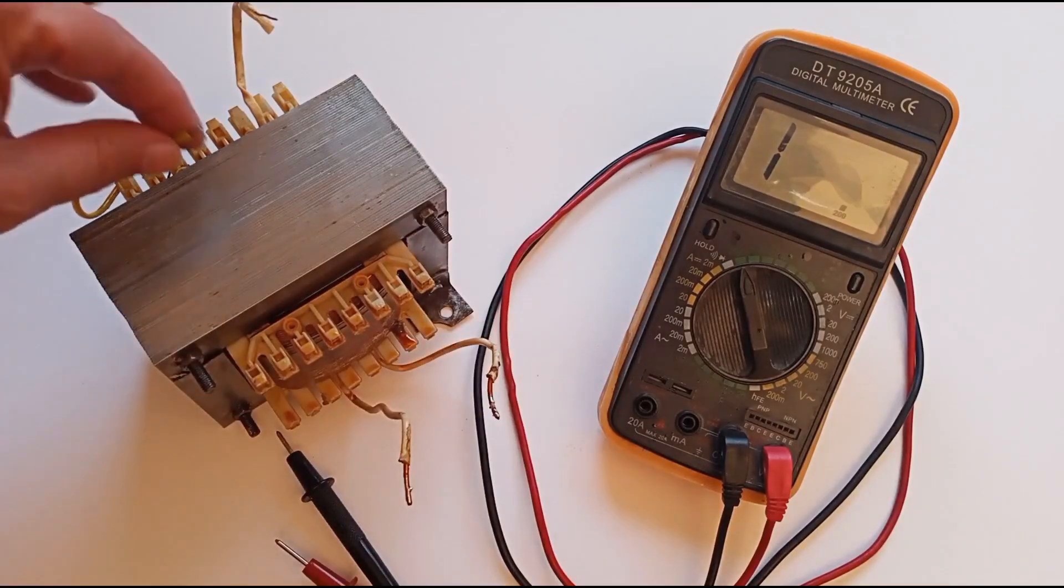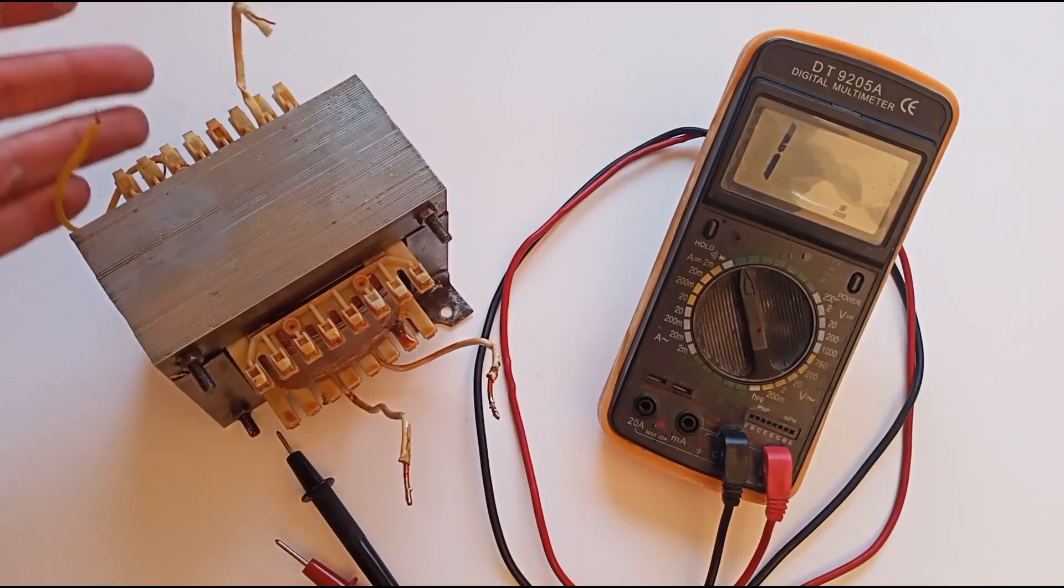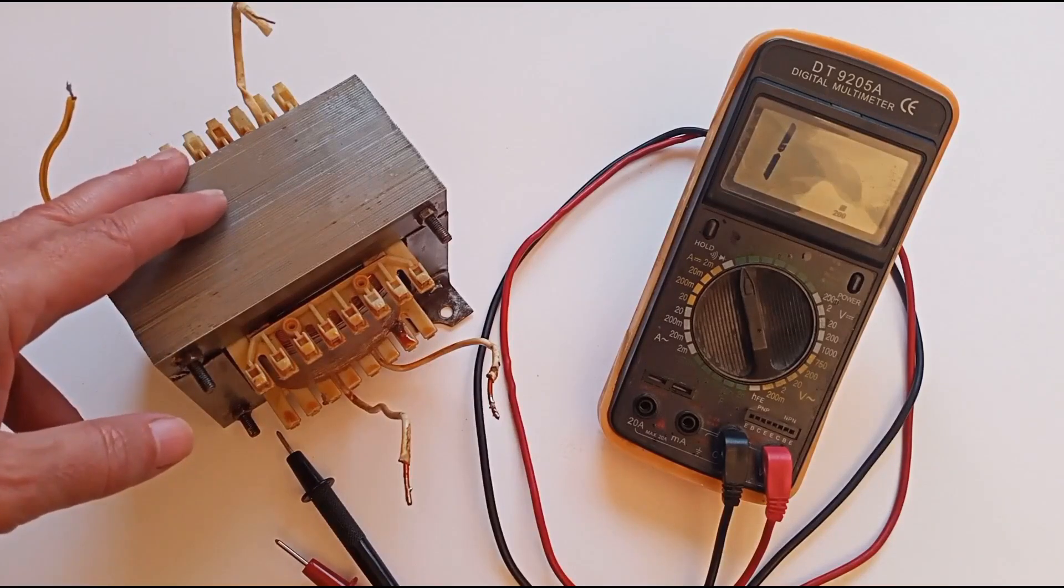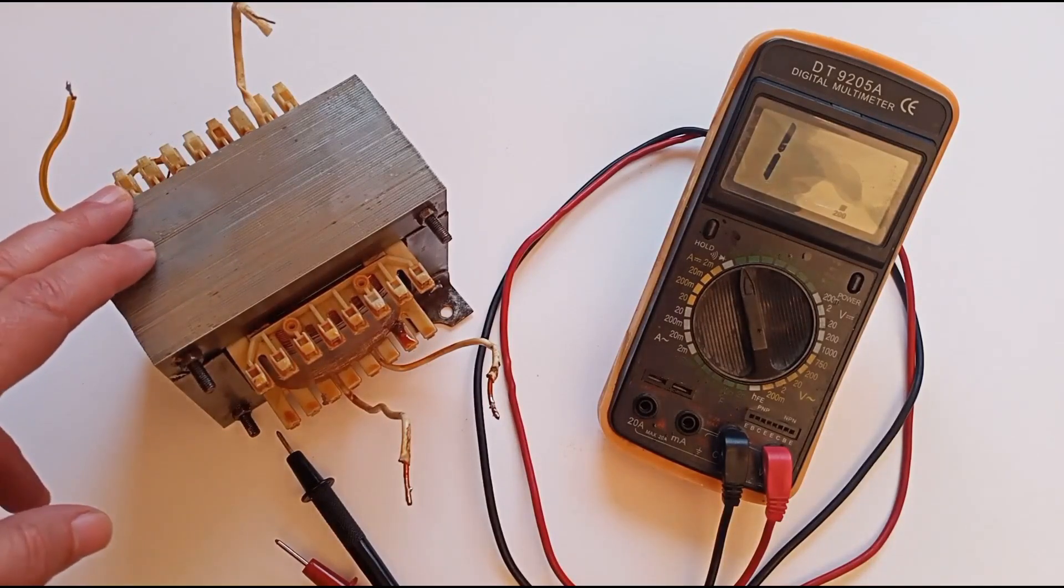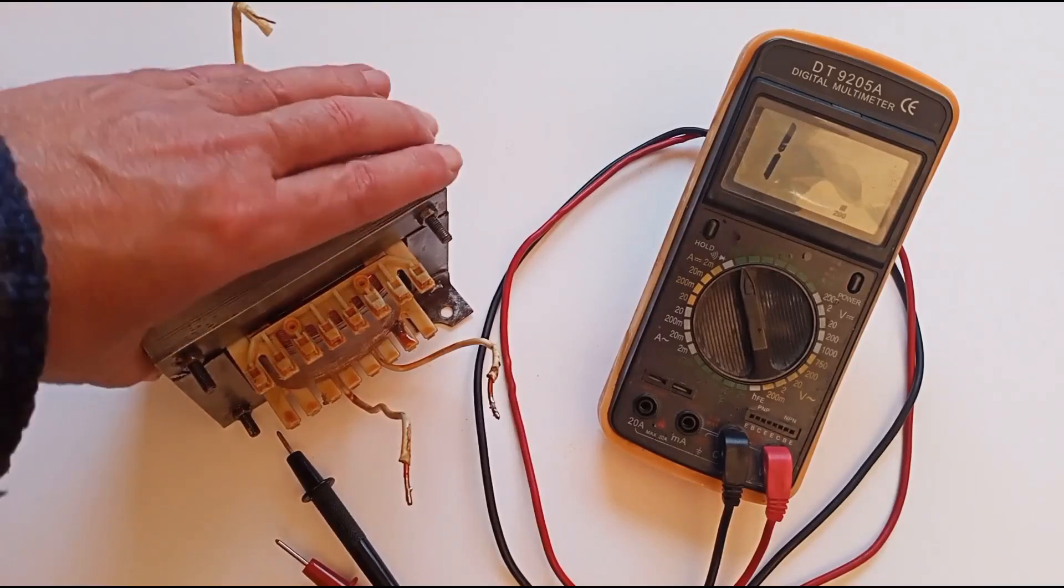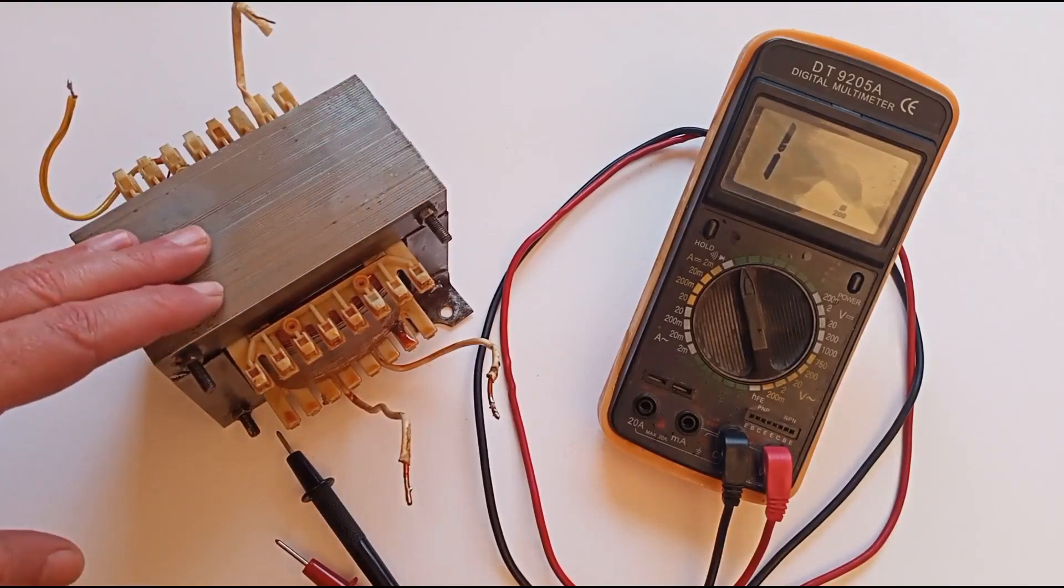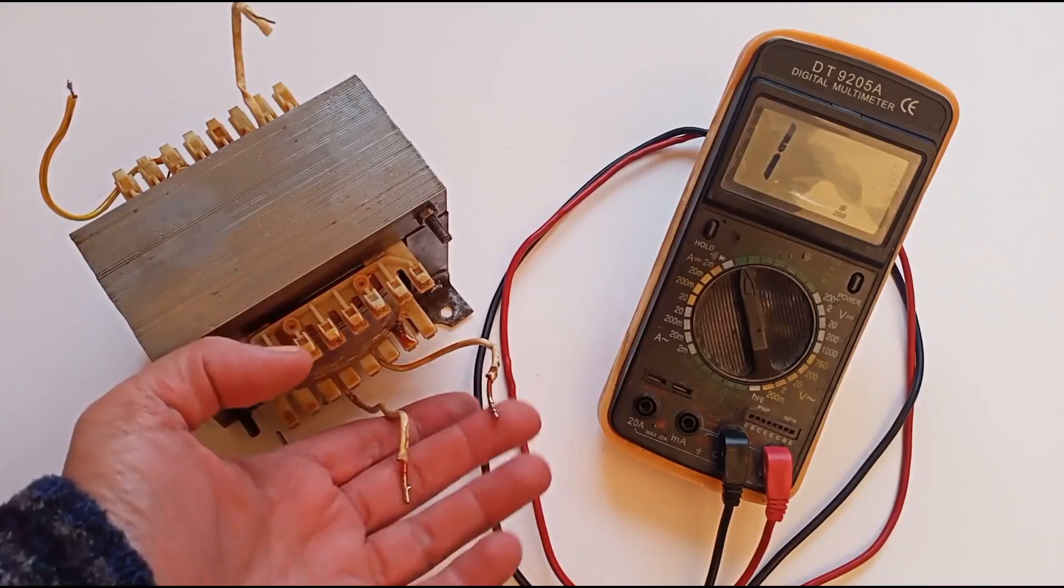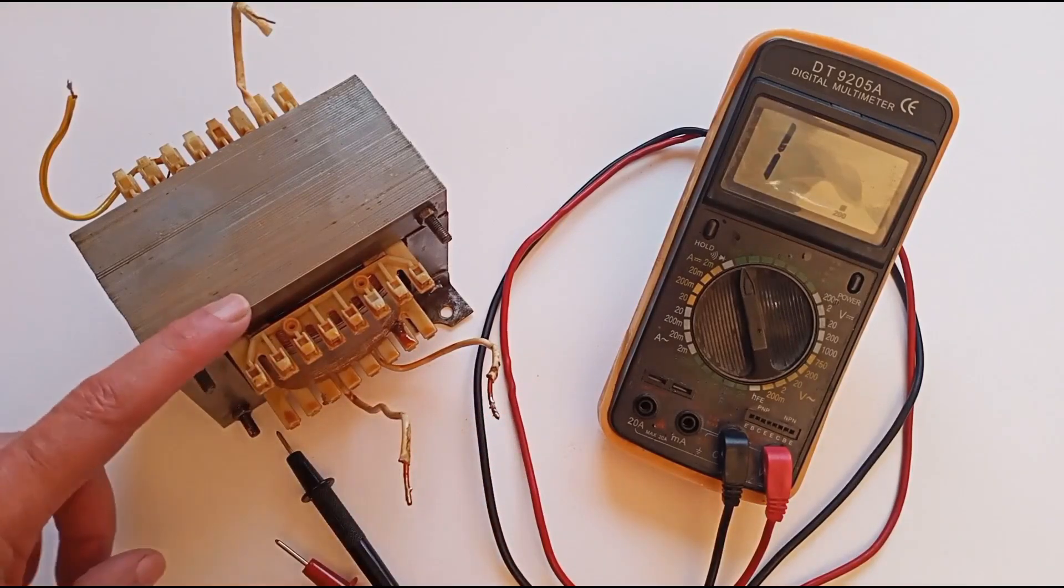Typically the resistance of the primary winding in a transformer designed to operate at 230 volts AC ranges from tens to hundreds of ohms depending on the transformer's power. The secondary winding, on the other hand, has a resistance of just a few ohms.